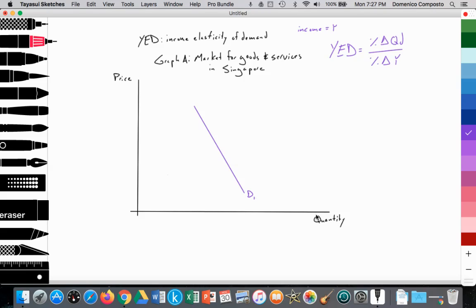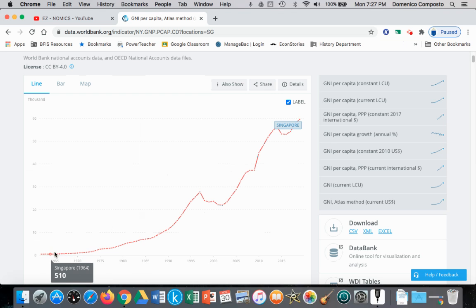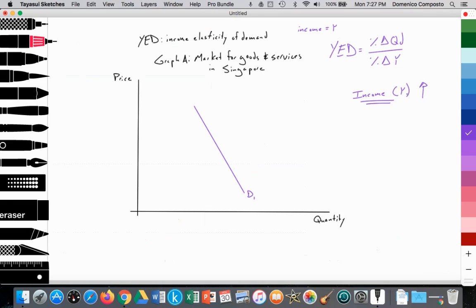Let's assume it's starting at this point. Here's D1. We're measuring quantity on the x-axis and price on the y-axis, but there's a third variable that is the independent variable, and that variable is income. So we're going to assume that income, which is represented by the symbol Y, we're assuming in this model that income is rising, like in the example of Singapore.